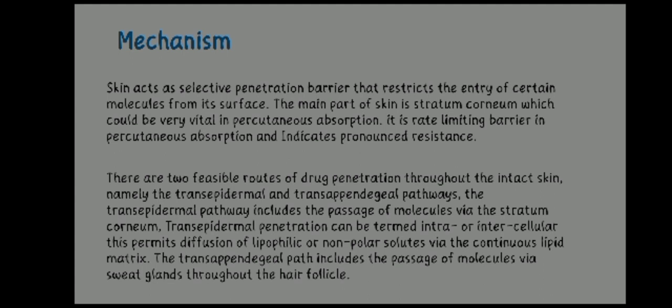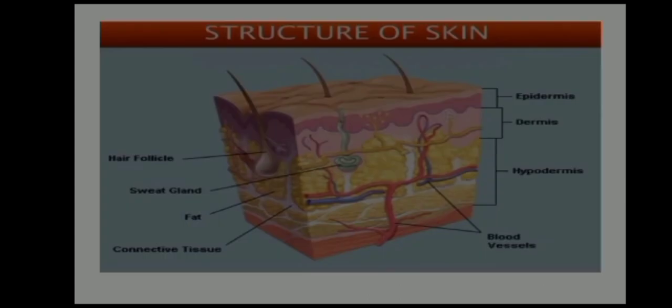The transappendageal path includes the passage of molecules via sweat glands and throughout the hair follicle. Here is the structure of skin: the first layer is epidermis, the second is dermis, the third layer is hypodermis, and there are blood vessels enclosed within it. On the left-hand side you can see the follicle, sweat gland, fatty substances, and connective tissues.